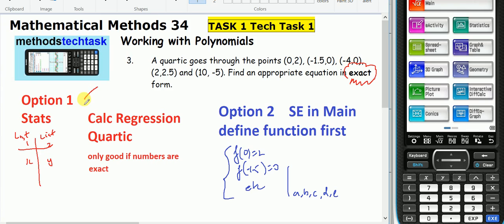Okay, there are two quick methods. The fastest method is option one, and you use statistics. You put your x values in list one, your y values in list two, and do quartic regression. But that's only if the answers come out exactly. So I'll demonstrate that.